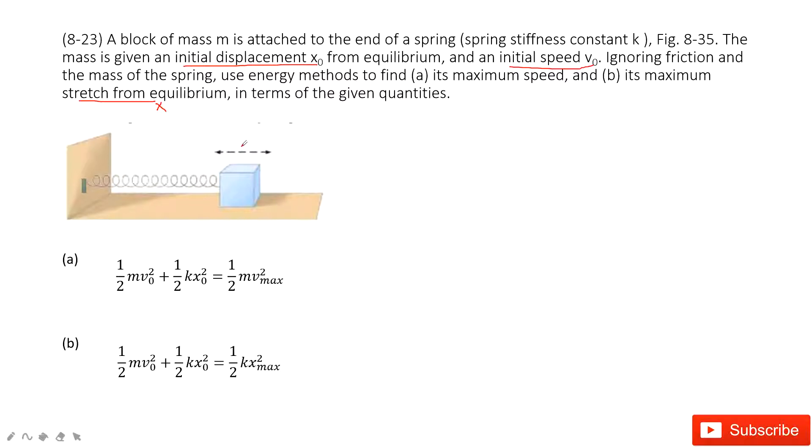Energy conservation makes the initial energy equal to the final energy. Initial energy is very easy to get because we know initial displacement and initial speed. Now the first one is maximum speed. So in which case can we get its maximum speed?